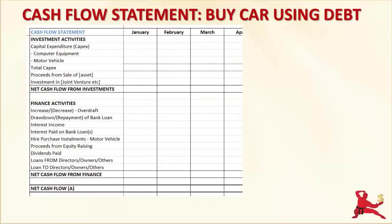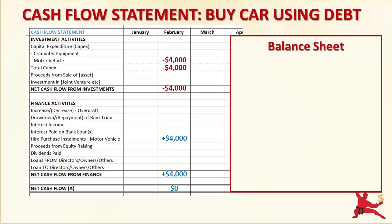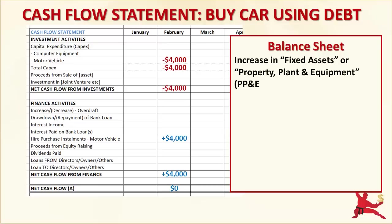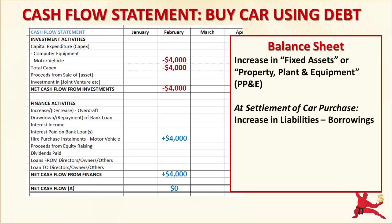Let's say your business buys a car for $4,000 in February and gets hire purchase finance to finance the car purchase. Your Cash Flow Statement will show a $4,000 payment as a cash outflow under Investment Activities, and the hire purchase financing will show as a cash inflow in Financing Activities. Nothing happened to your cash because the purchase was 100% financed by borrowings. The investment in the car will show up as a $4,000 increase in assets on your Balance Sheet, and the borrowings will show up as an increase in liabilities because you borrowed $4,000 in the form of a hire purchase facility.